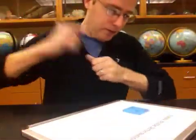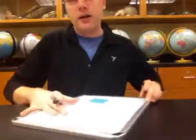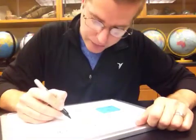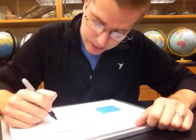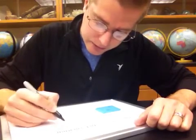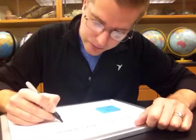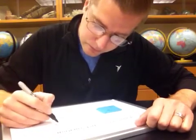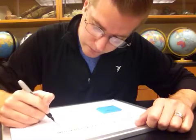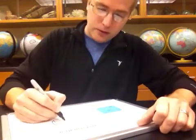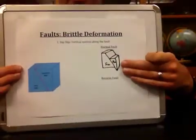We're going to make a drawing from our undeformed block showing what it would look like after normal fault motion. Drawing blocks is a good skill to have for geology because it's a very visual science. We're left with an image showing the foot wall and the hanging wall, where the hanging wall has slid down the foot wall.